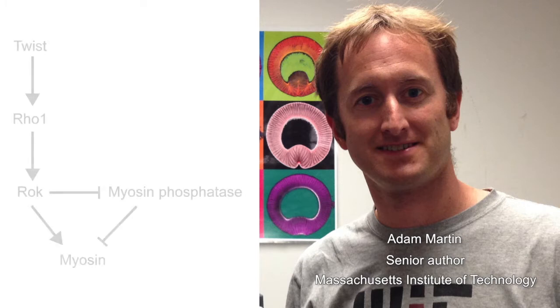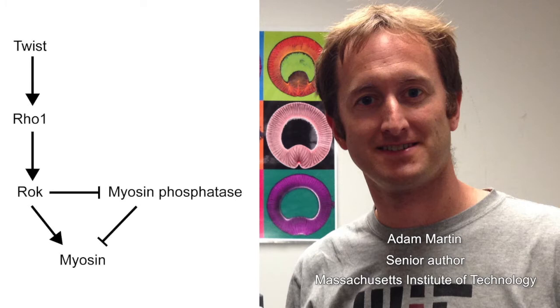The idea was to test what would happen if you uncoupled the activation of myosin from its upstream regulators — namely Rho kinase, but also myosin phosphatase, which would be expected to reverse that phosphorylation and result in myosin turnover.